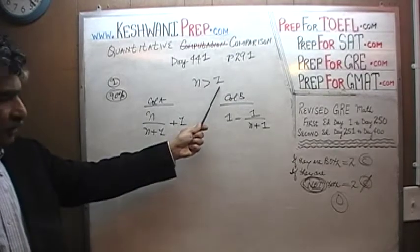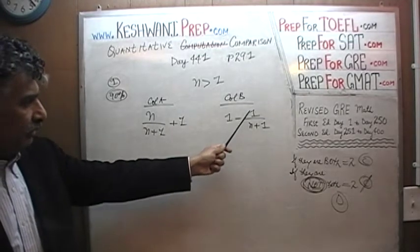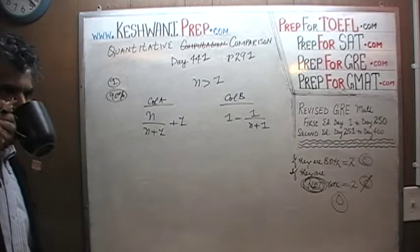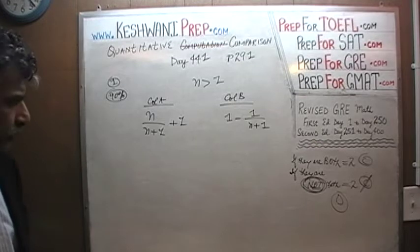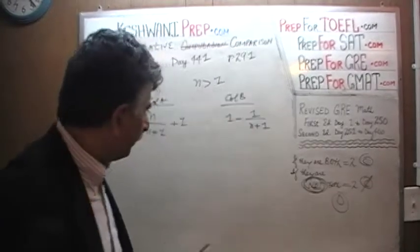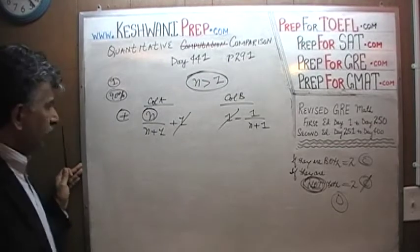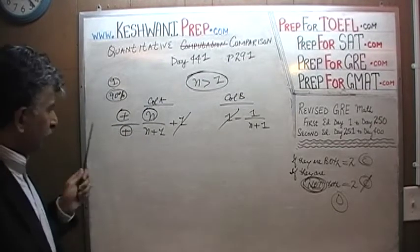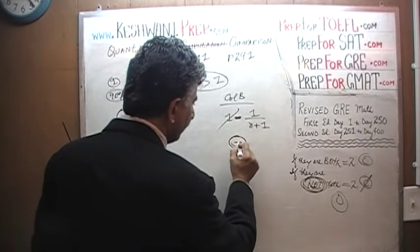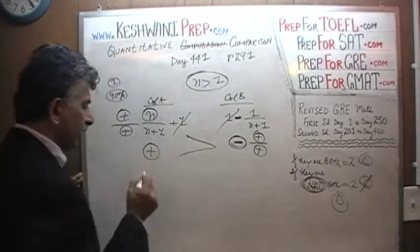We have a quantity n which we are told is more than 1. We are being asked to compare n over (n+1) plus 1 versus 1 minus 1 over (n+1). The number 1 appears in both columns — so let's subtract 1 from both columns. Once that 1 goes away, the top quantity n is positive since n is more than 1, and the bottom quantity n+1 is also positive, so Column A is positive. But Column B becomes negative — negative in front with positive over positive — so it is a negative quantity. A negative quantity will always be less than a positive quantity. The answer is A.